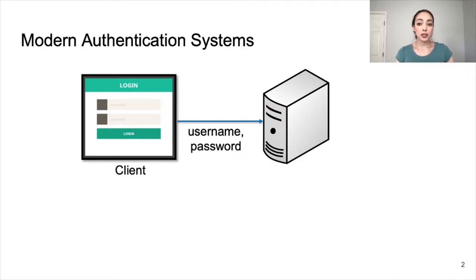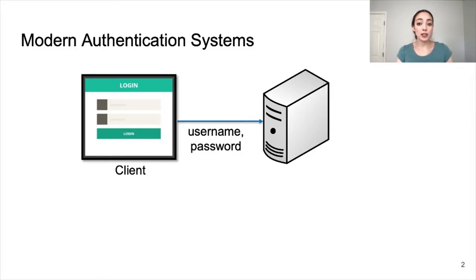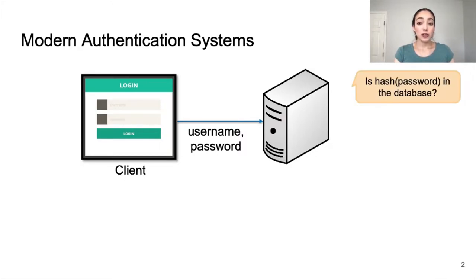Modern authentication systems still mainly rely on password-based logins. You probably log into your email, bank account, or social media account using a username and password, and the login client sends those credentials to the server. When the server receives the username and password, it hashes the password and checks that the password hash matches the hash stored in the database corresponding to that username.